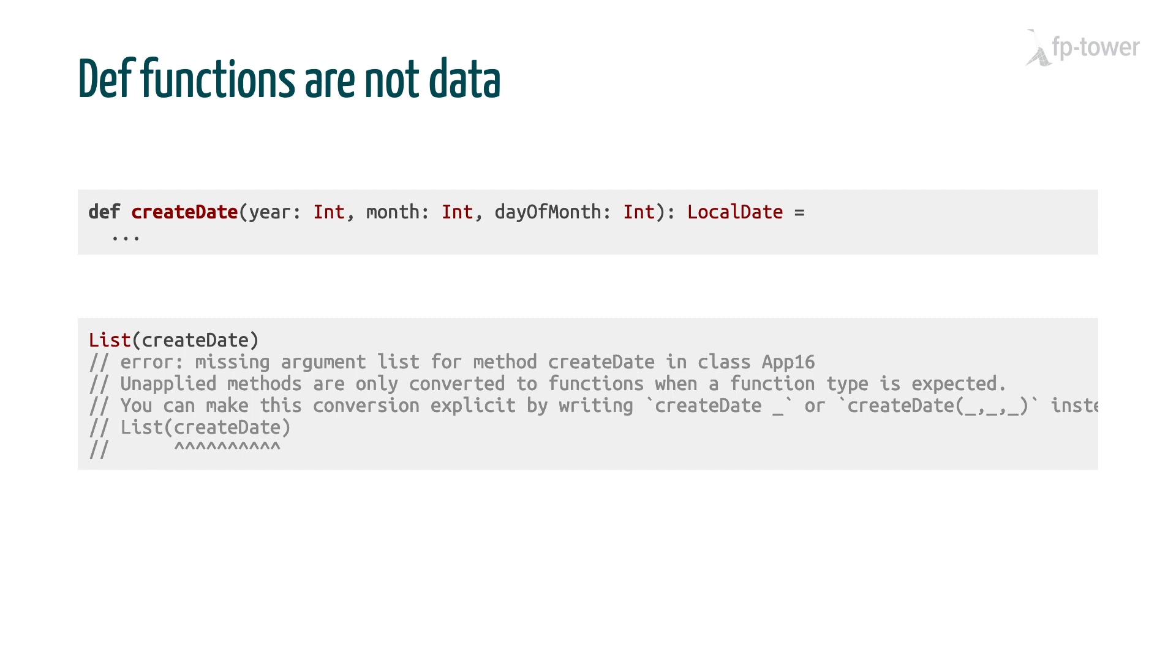However, one thing to remember about def function is that they are not data, they are not values like val functions. So we cannot put them inside a data structure, or assign them to a variable. Here, if we try to do so, we'll get a compile time error. But if we look at the error message, we see something quite interesting. It tells us that actually what we tried could have worked, if we had added an underscore after the method's name.